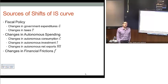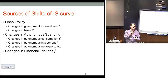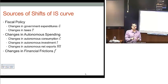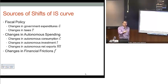The last piece is changes in financial frictions, which has to do with changes in credit spreads from benchmark rates. This reflects the availability of credit to firms who would like to borrow, and it's going to impact the actual cost of borrowing that firms face.